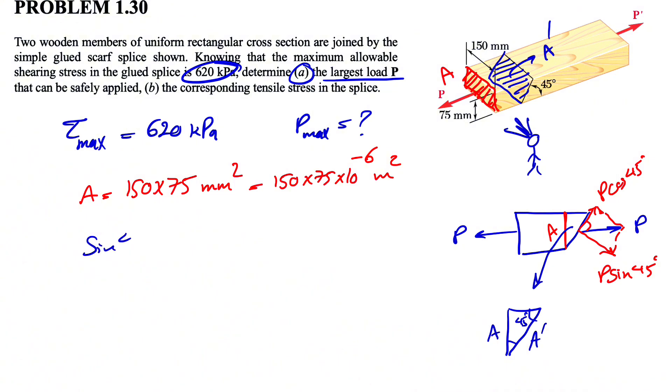So if we find the sine of 45 degrees, we basically have A, which is the opposite over A prime. So the area that we need here is A prime, which will be A over sine of 45 degrees.